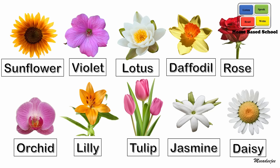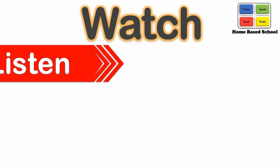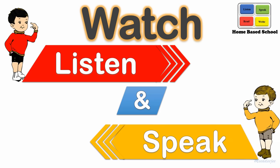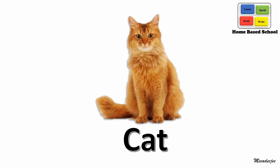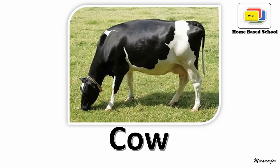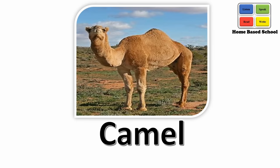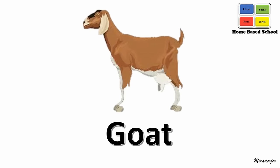Unit 8: Animals Name. Watch, listen and speak. Cat, this is a cat. Cock, this is a cock. Cow, this is a cow. Camel, this is a camel. Dog, this is a dog. Goat, this is a goat.